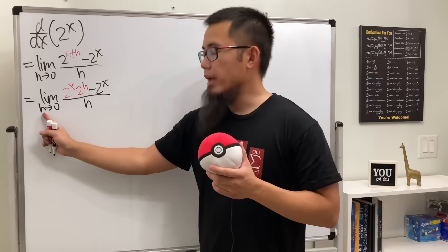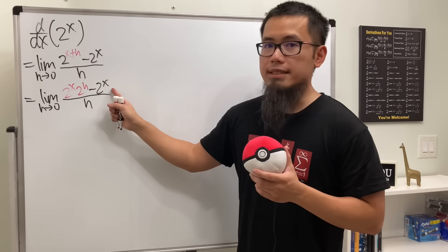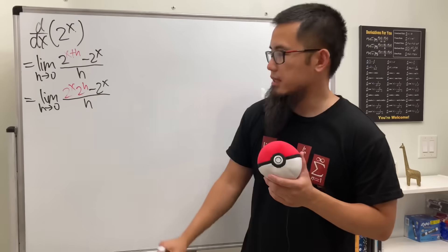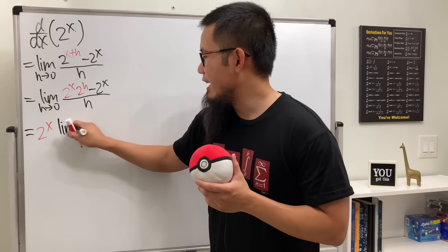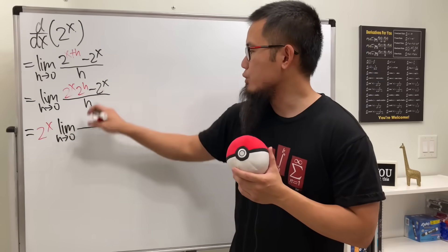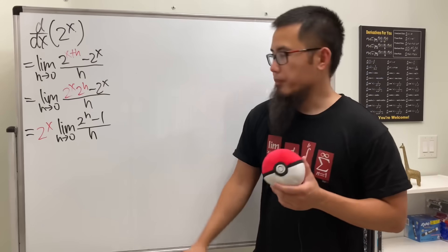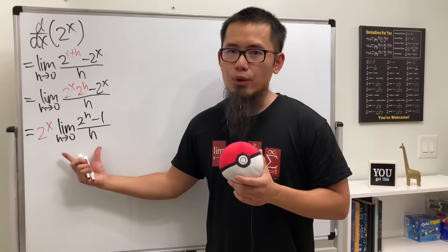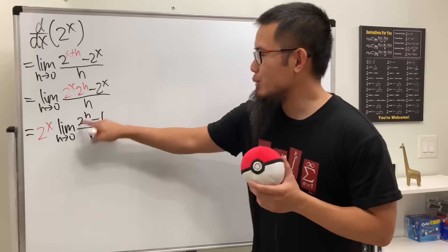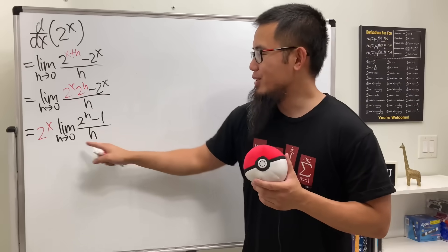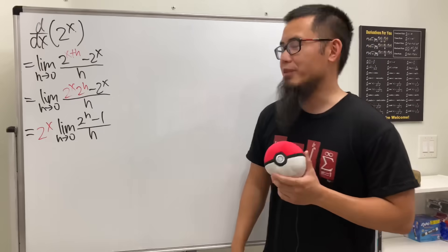And here, because we have h going to 0, so x is a constant. We can factor out 2 to the x and put it on the outside of the limit. This will give us 2 to the x times the limit as h going to 0 of 2 to the h minus 1 over h. So now, we just have to figure this out. Let's go ahead and plug in 0 into here. We cannot do that because 2 to the 0 is 1, 1 minus 1 is 0, and then 0 on the bottom. We get 0 over 0. That's indeterminate. So we have to do more work for that.